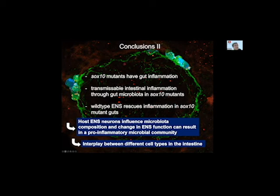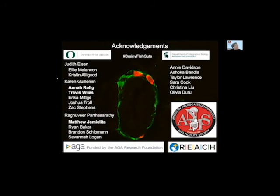In conclusion: SOX10 mutants have gut inflammation; they show transmissible intestinal inflammation through the gut microbiota; and wild-type ENS can rescue the inflammation in SOX10 mutant guts. This really shows that the host ENS neurons influence the microbiota composition, and that a change in ENS function can result in a pro-inflammatory microbiota community. This highlights the interplay between the different cell types in the intestine that this whole symposium is about. For the future, it's going to be interesting to see what other parts of ENS function influence the microbiota composition. I want to acknowledge the people in Judith Eisen's lab and the Karen Guillemin lab at the University of Oregon who participated in this work. Thank you.